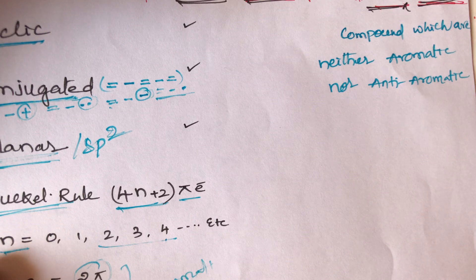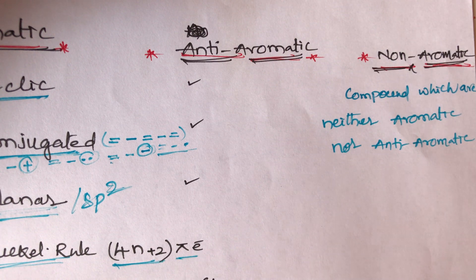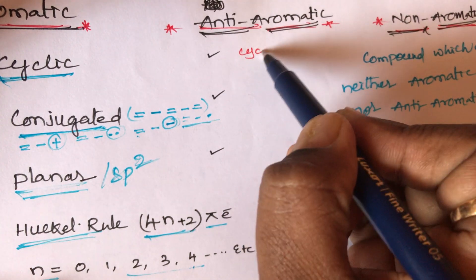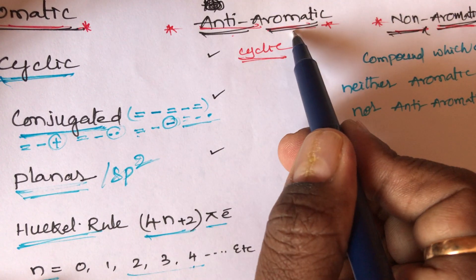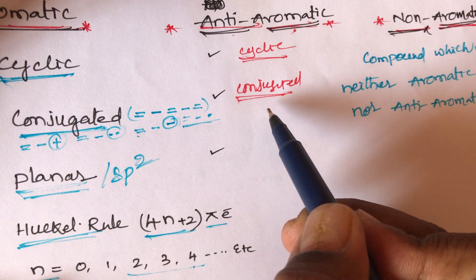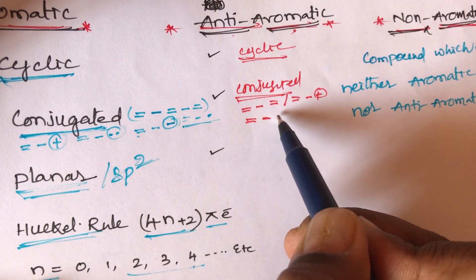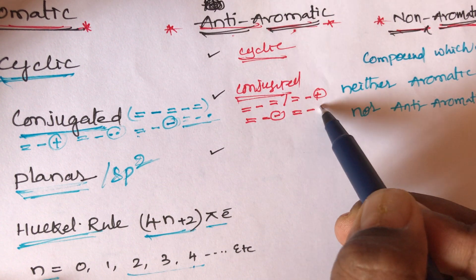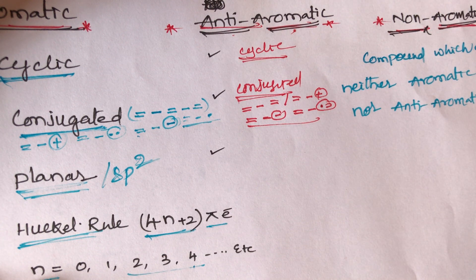Now, what about the anti-aromatic condition? The anti-aromatic condition also shares the first condition: the compound must be cyclic. The second condition is also the same: the compound must be conjugated — alternating double and single bonds, or double bond with positive charge, negative charge, or lone pair.